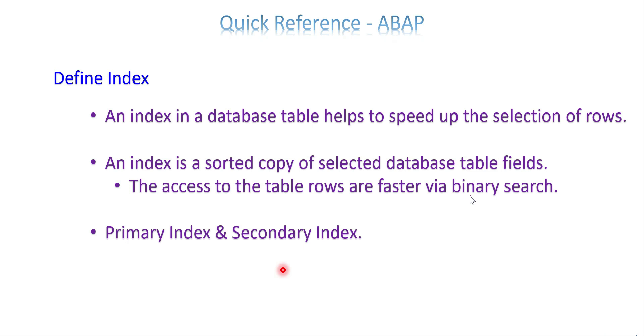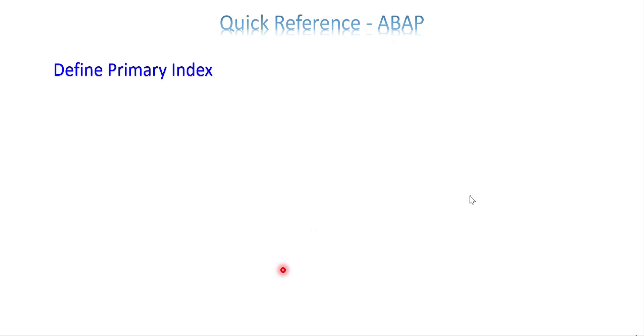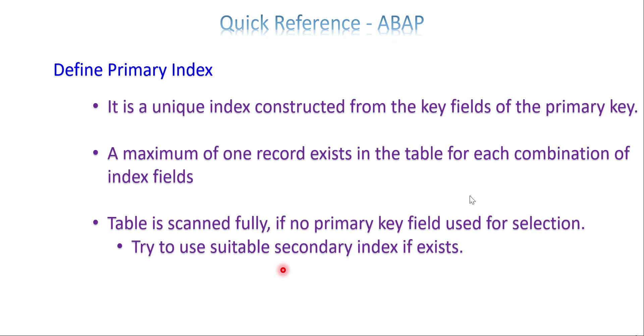Define Primary Index: It is a unique index constructed from the key fields of the primary key. Whatever fields you keep as key fields are considered as primary key at the time of creating your table. If you create a custom table and decide three fields are going to be key fields, all three fields come under the primary index.